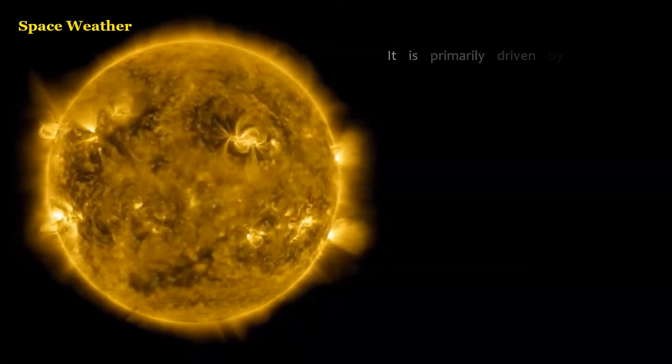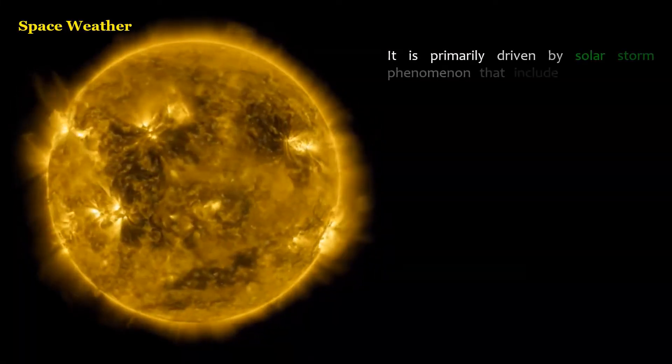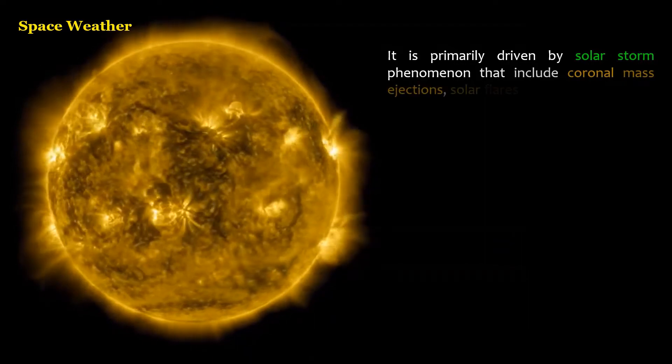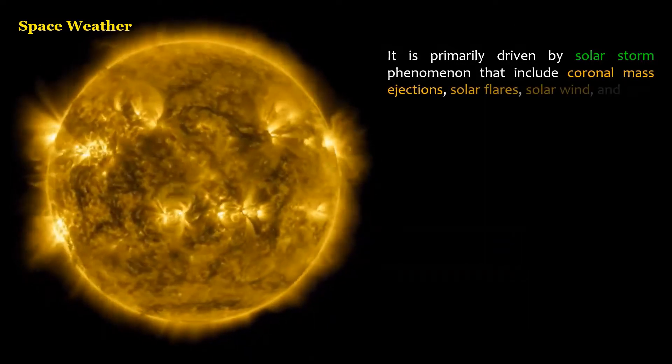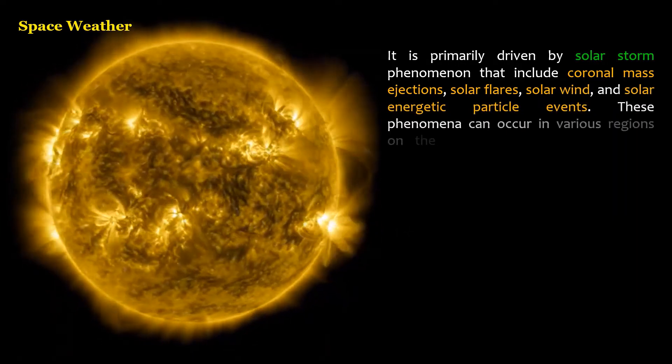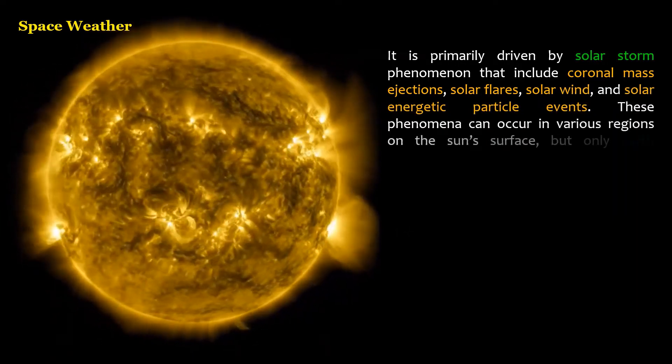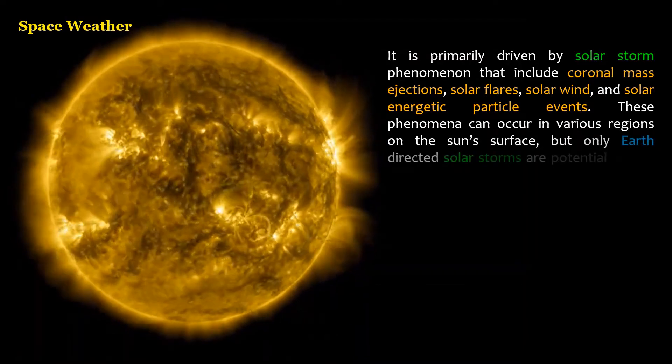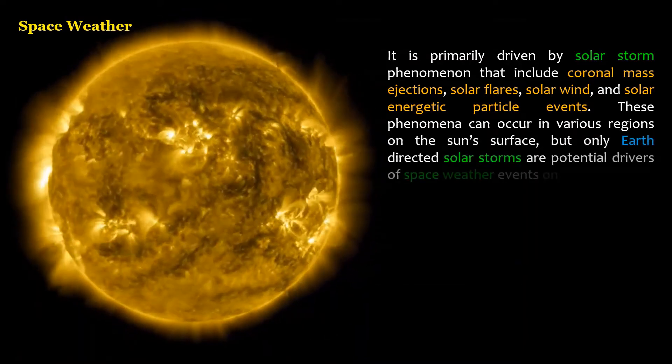It is primarily driven by solar storm phenomena that include coronal mass ejections, solar flares, solar wind, and solar energetic particle events. These phenomena can occur in various regions on the sun's surface, but only Earth-directed solar storms are potential drivers of space weather events on Earth.